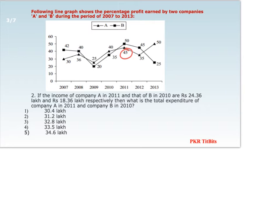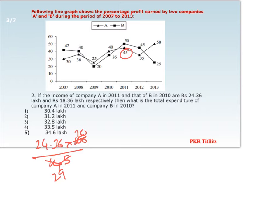So 145% = 24.36 lakhs and we have to find 100%. That is 24.36 × 100 ÷ 145. Calculating approximately, this comes out to be around 16 lakhs for company A's expenditure.